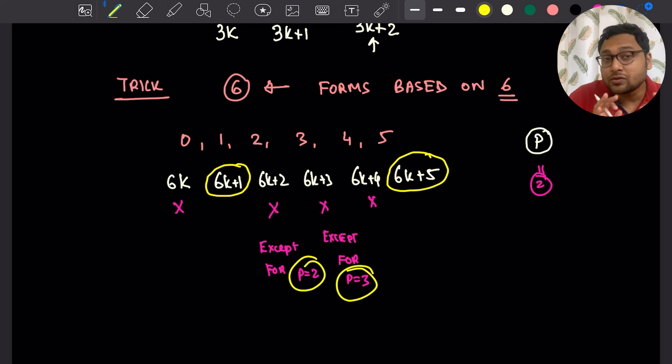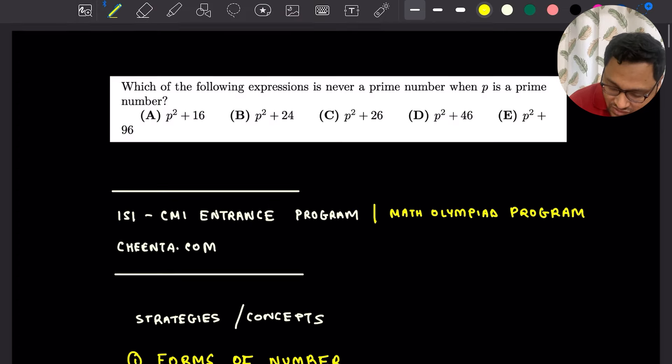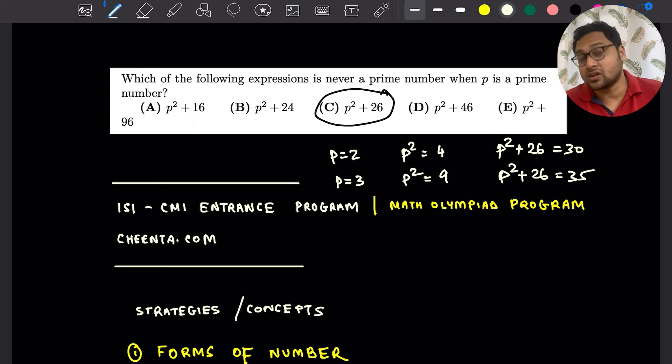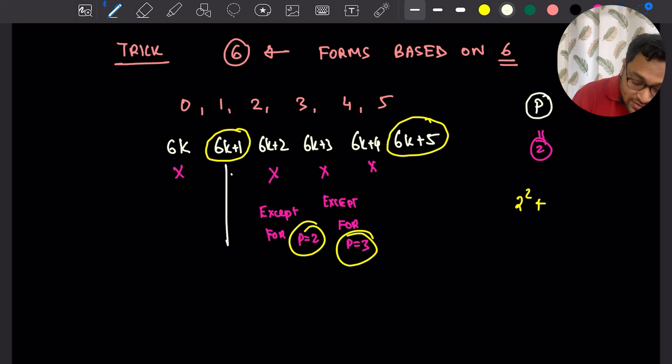You do have to check with 2 and 3 separately, but let's focus on 6k plus 1 and 6k plus 5. I'll give you the answer actually. The answer is p squared plus 26. We will see in a moment why p squared plus 26 is never a prime number. You can check with p equals 2, so p squared plus 26 is 30 which is not a prime number. Similarly, for p equals 3, p squared is 9, p squared plus 26 is 35. For 2 and 3, we hand check what's going on. But for the rest of the prime numbers, we will use the forms 6k plus 1 and 6k plus 5.